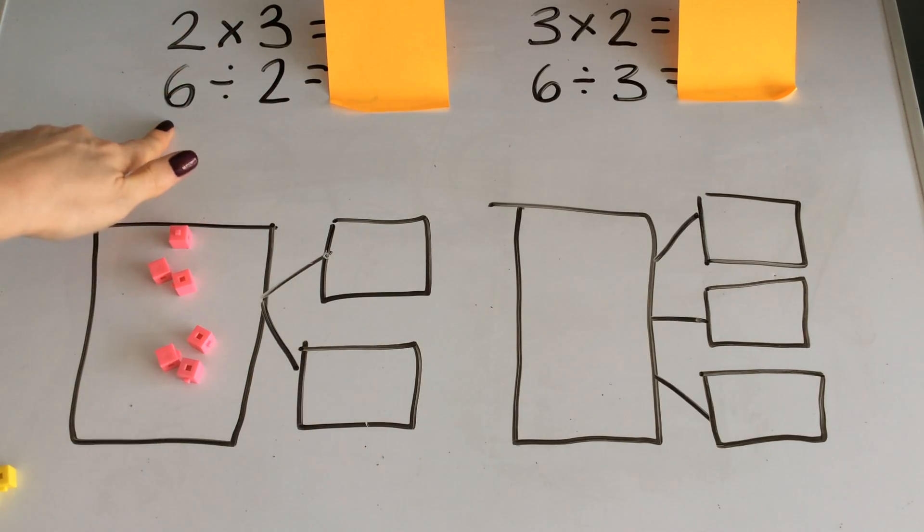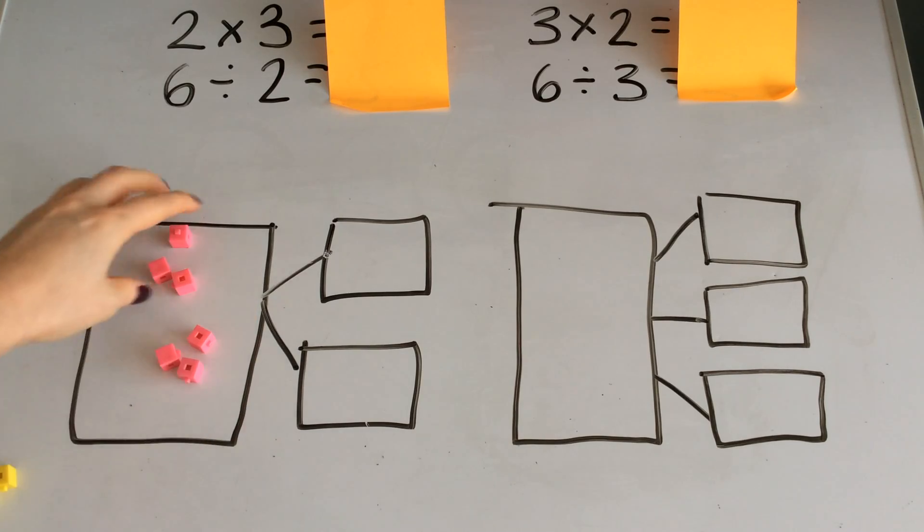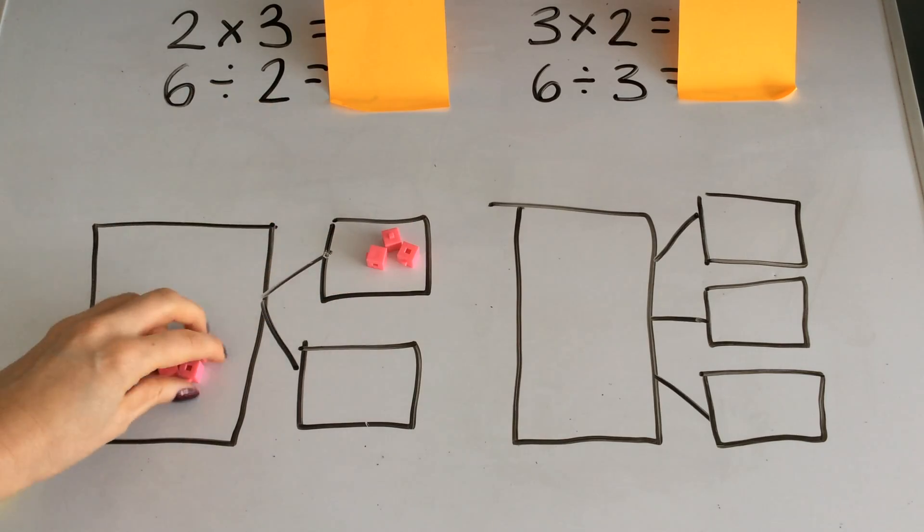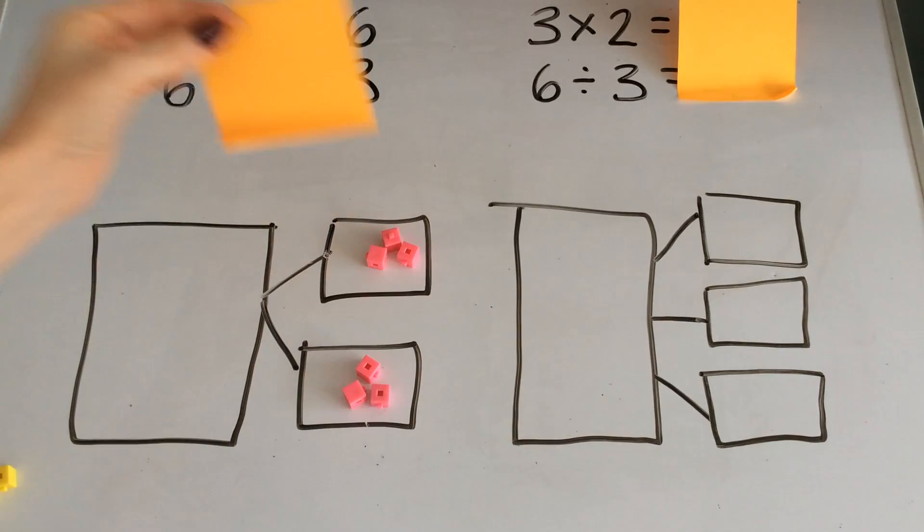If I wanted to find out 6 divided by 2, I'm going to start with my whole of 6. I'm going to separate it into 2 groups. 6 divided by 2 is equal to 3.